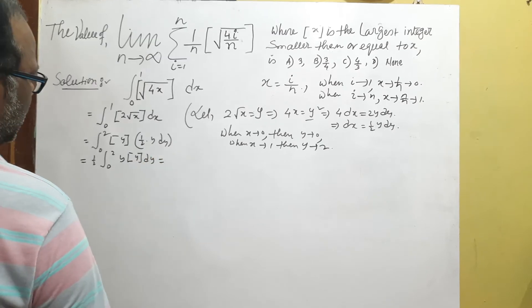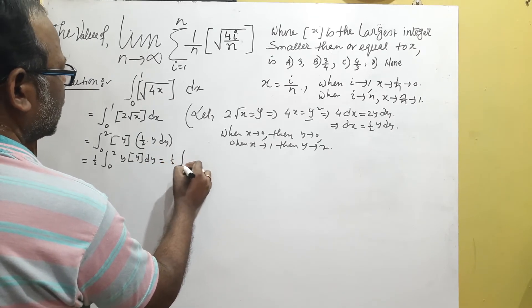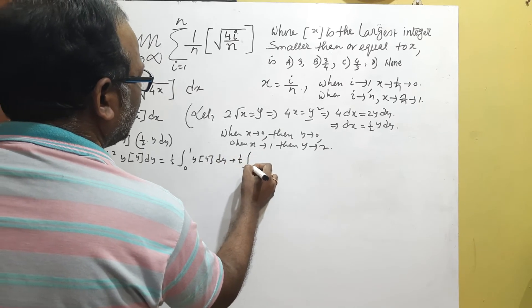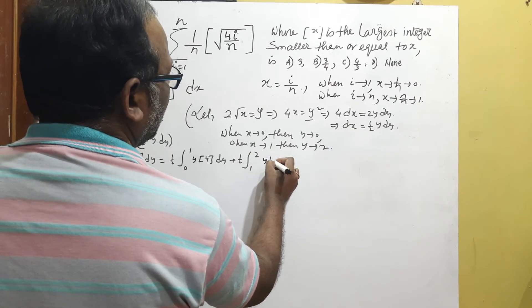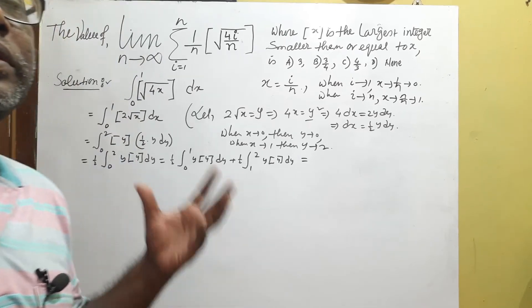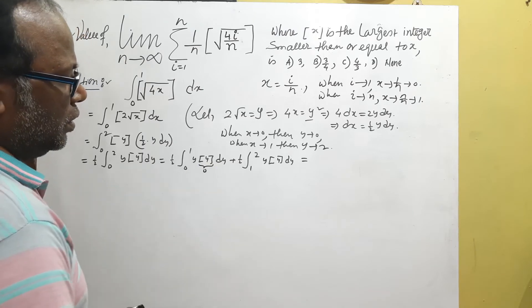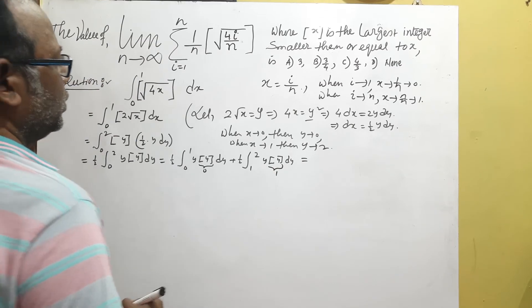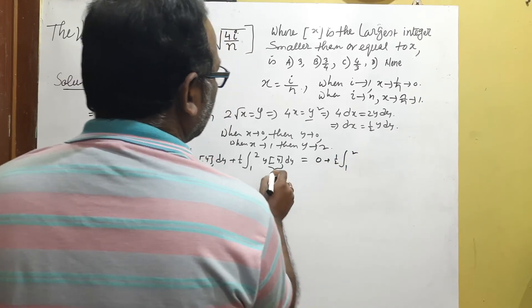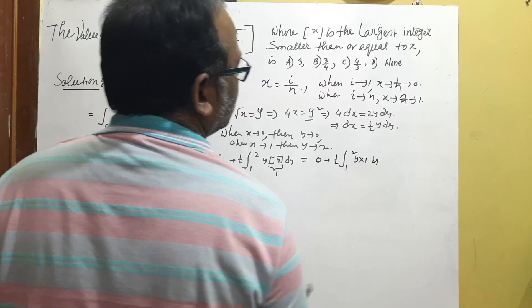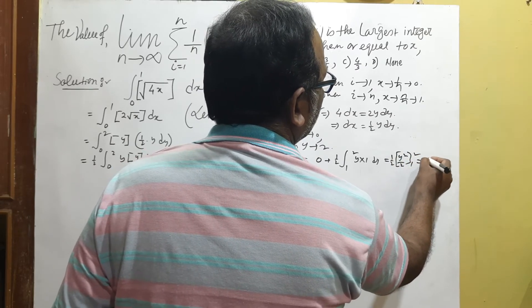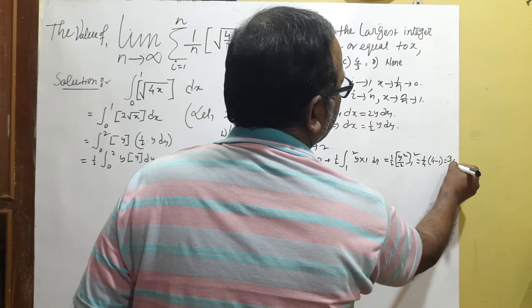This can be split into (1/2)[∫₀¹ y · floor(y) dy + ∫₁² y · floor(y) dy]. From 0 to 1, the integer part of floor(y) is 0, so that term is 0. From 1 to 2, floor(y) = 1. Therefore we get (1/2) ∫₁² y · 1 dy = (1/2)[y²/2]₁² = (1/4)(4 − 1) = 3/4. This is the answer by the first method.